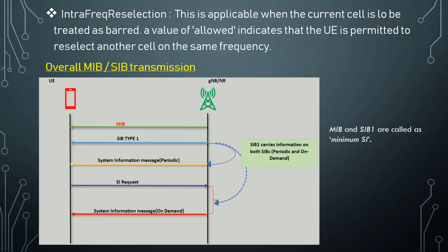When the UE powers on in case one, it will search for the cell using PSS and SSS, then perform PBCH decoding to get the MIB and store it. It will then check the cell barred information — if barred it will stop; if not barred it will move to the next process, decode SIB1 using the parameters provided by the MIB, and store the result. Since SIB1 indicates no on-demand system information, it will decode other system information as per the schedule.